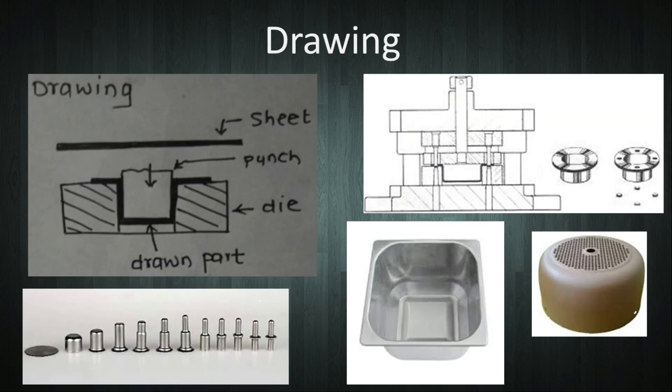The next operation is drawing. In this operation, the punch is pressed against a die on which sheet metal is held. The sheet metal flows plastically in the clearance between punch and die to form a thin-walled vessel as shown in the figure. You can see the drawing operation here.